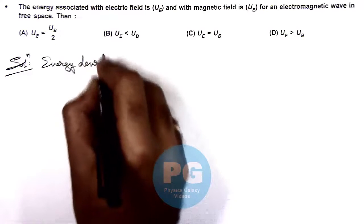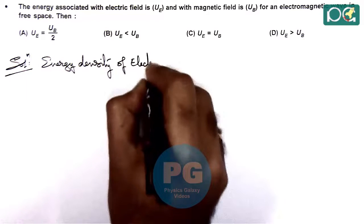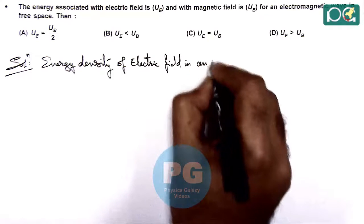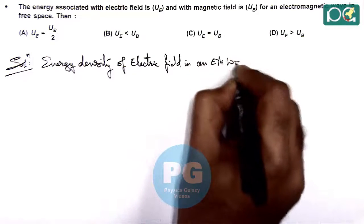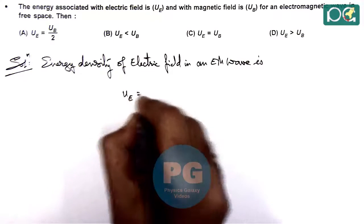Energy density of electric field in an electromagnetic wave is, this energy density Ue we write, it is half epsilon-not E square.